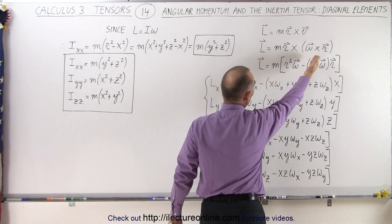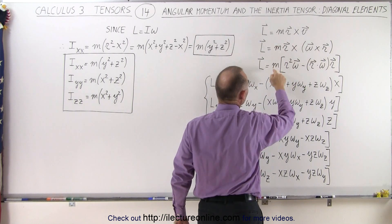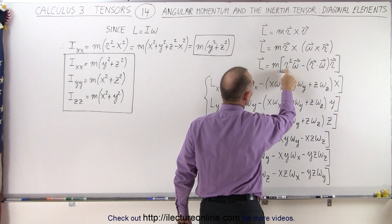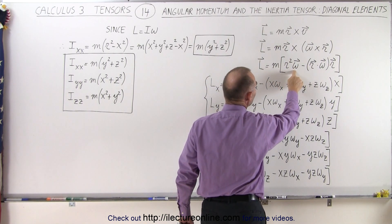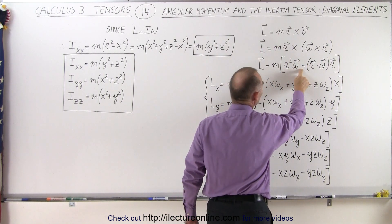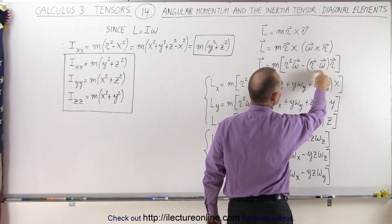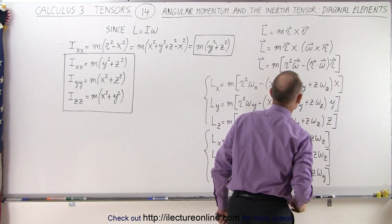But if we then manipulate that equation a little bit, the equation becomes — factoring out an m — we get m times r squared times omega minus the dot product between r and omega, times r.